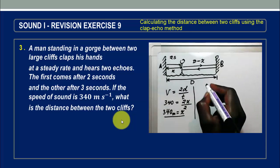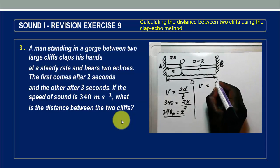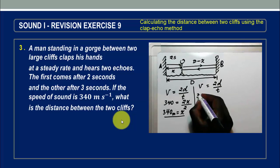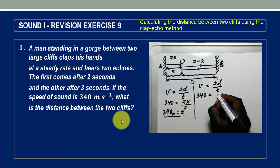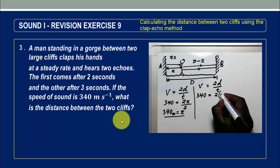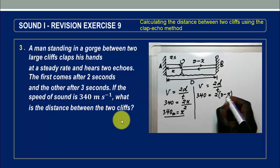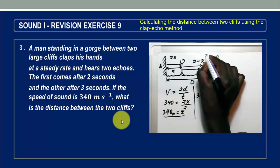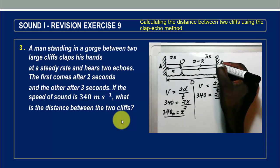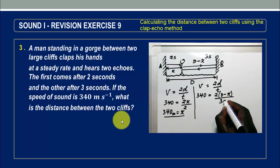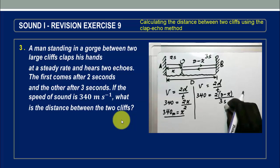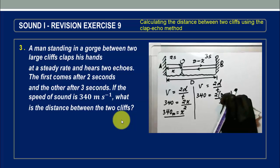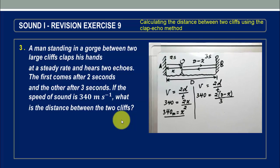Now we come to the other section towards cliff B. Again, we apply the same equation: V equals 2D over T. The speed of sound is 340 meters per second, the distance covered is 2 times (D minus X), and the time this time is 3 seconds, since it took 3 seconds for the echo from that section.